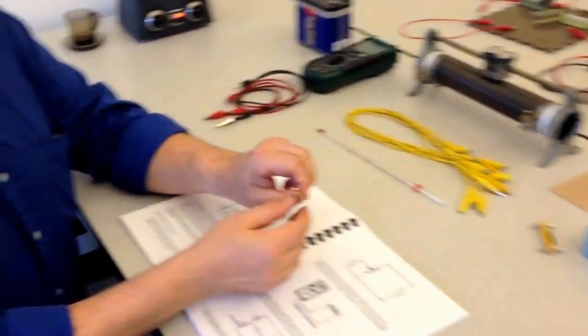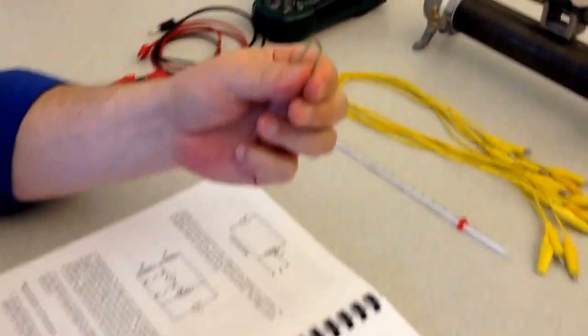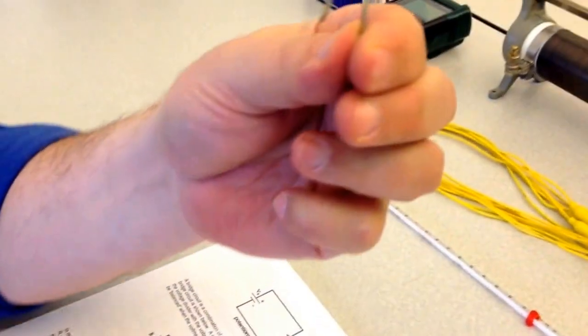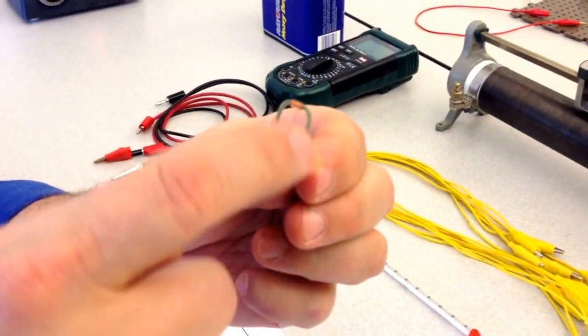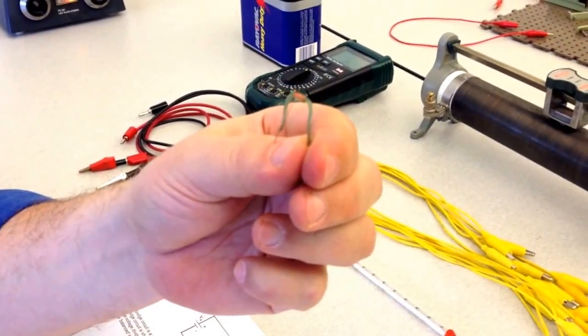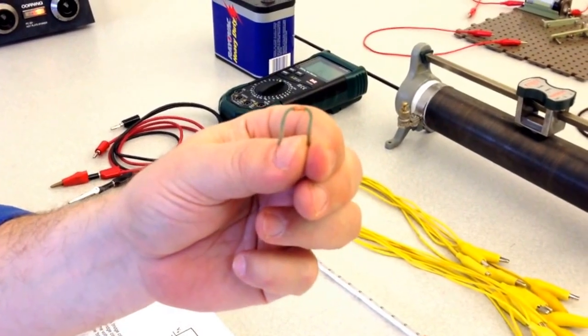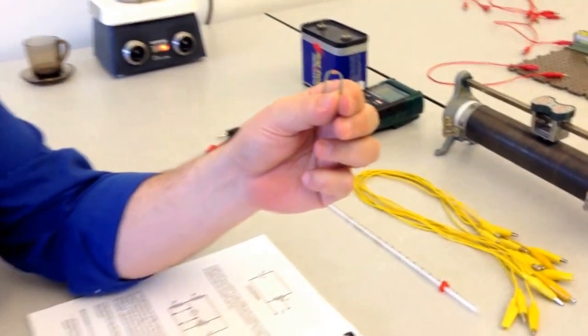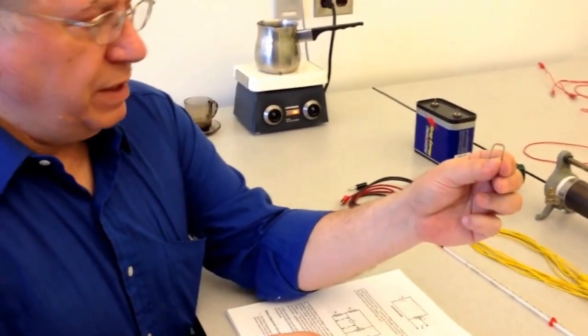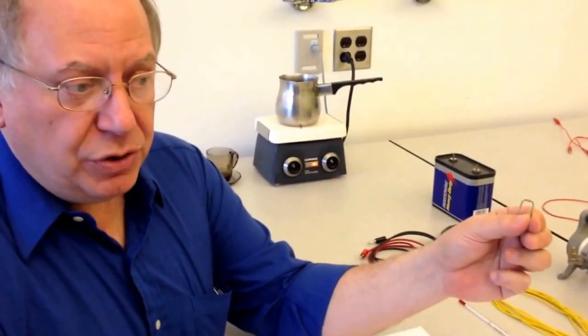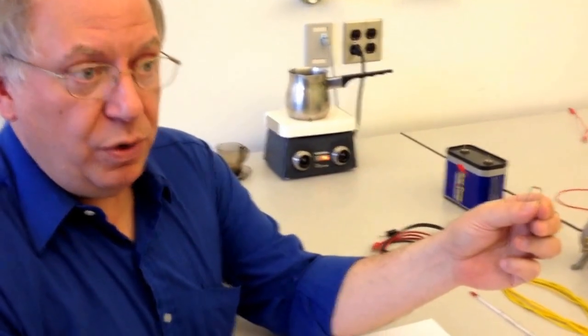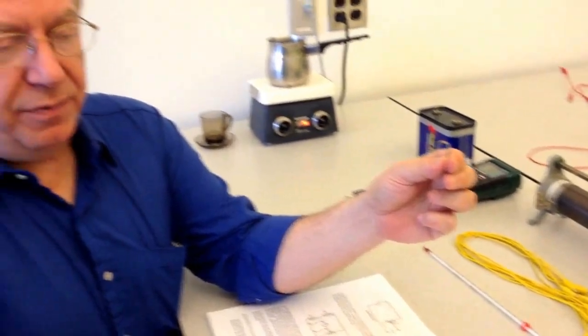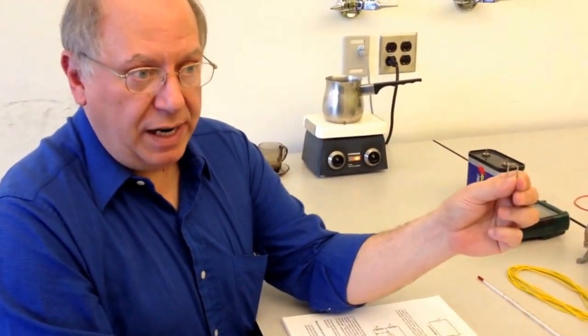One of these components is called a thermistor. This little bump here that you can see inside this rubber tubing, clear rubber tubing, is a tiny resistor. But the difference between this resistor, a thermistor, and a regular resistor is that a thermistor changes its values with temperature. So as you increase or decrease the temperature, the value of the resistance will change drastically.